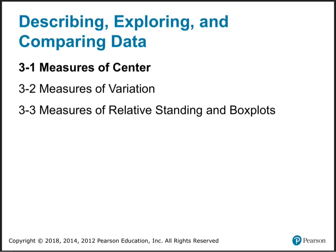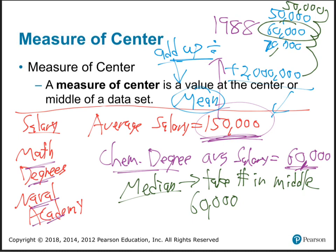We're in 3.1 and then we're going to do 3.2. Basically, if you've got a bunch of numbers, how do you find the middle? And how do you find how much they vary — that'll be 3.2. The middle of a bunch of numbers is called the average, and it goes by some special names. There are three of them: mean, median, and mode.